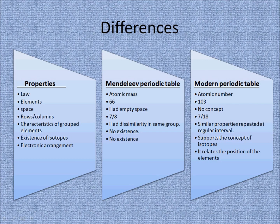Looking at the differences one by one: 66 elements are present in Mendeleev's periodic table and 103 elements are present in the modern periodic table. In Mendeleev's periodic table, there are some gaps for missing elements to be filled by future discoveries, whereas in the modern periodic table there is no such concept. In terms of structure, Mendeleev's periodic table has 7 rows (7 periods) and 8 columns (8 groups), whereas the modern periodic table has 7 periods and 18 groups.